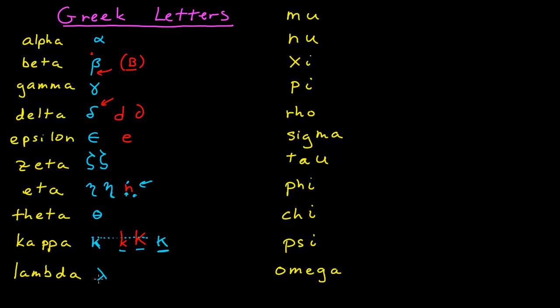Lambda is usually not a problem — it looks like that. Mu is a problem. You don't want your mu to be confused with your u, so I always emphasize that initial tail into the mu. Nu is another huge problem. I write my nu's with highly exaggerated curves. The problem with nu is it can be confused with a v or a u. I emphasize how both sides of my nu are concave the same way, and that helps me distinguish it from the Roman letters.